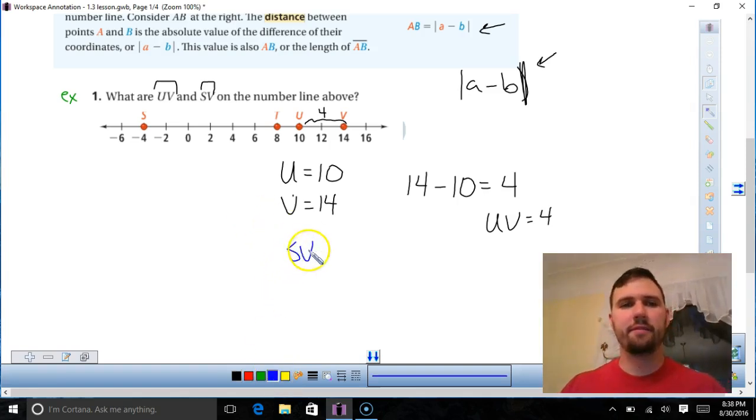Now to find SV. V is 14, right? I have that written up there. And S is negative 4. So now what's my bigger number? Well V is because it's 14. Negative numbers are always smaller than positive numbers. So I'm going to go 14 minus negative 4. I subtract a negative. A bad thing happens to a bad person, and that's a good thing. And I get 18. So the length of that is 18. And you could count through that as well instead of doing the subtraction.